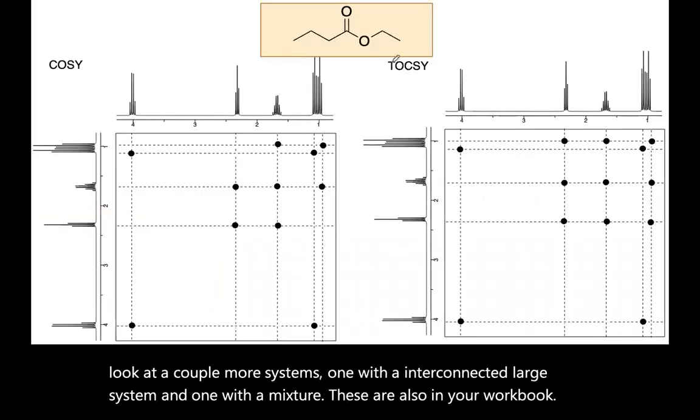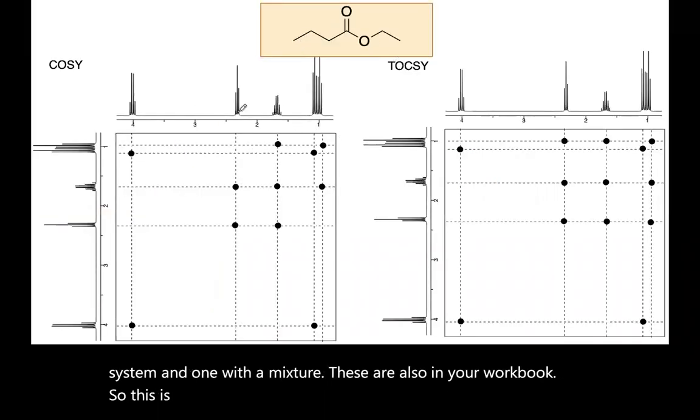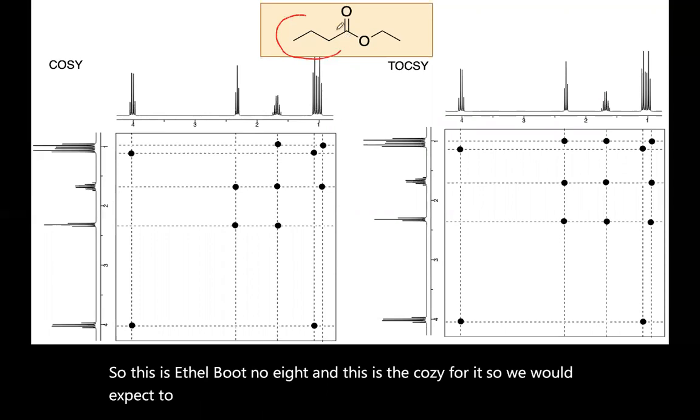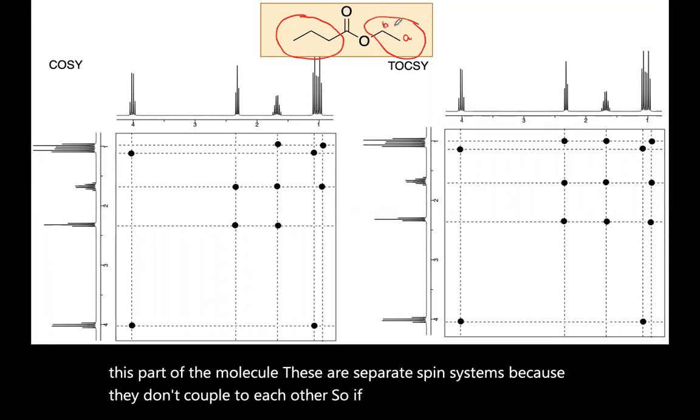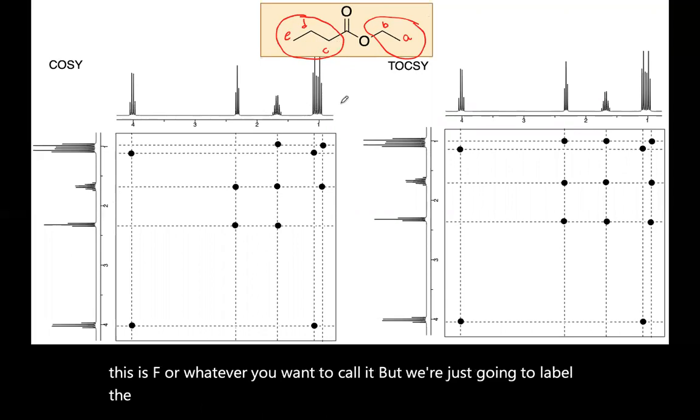So this is ethyl butanoate and this is the COSY for it. So we would expect to see coupling in the COSY for this part of the molecule and for this part of the molecule. These are separate spin systems because they don't couple to each other. So if we call this A and B and then C, D and E, this is F or whatever you want to call it, but we're just going to label the protons.